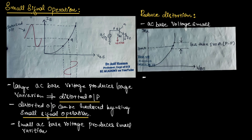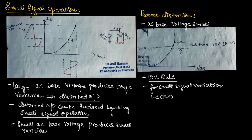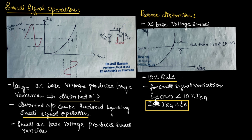This can be achieved by using the 10% rule. According to the 10% rule, for a small signal variation, the AC emitter current — which is the peak-to-peak value of emitter current — should be less than 10% of IEQ, as shown in this figure. So AC variation at IE should be less than 10% to reduce distortion at the output. Here IE is equal to IEQ plus small ie, where capital IE is the total current, IEQ is the DC emitter current, and small ie is the AC emitter current. The AC signal is said to be small when the peak-to-peak AC emitter current is less than 10% of DC emitter current.